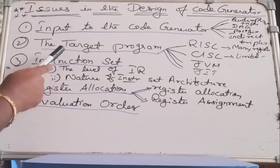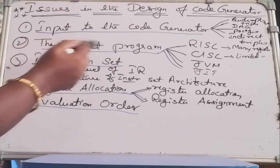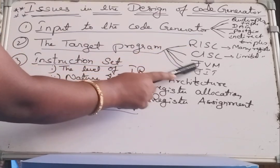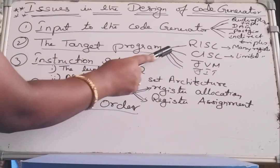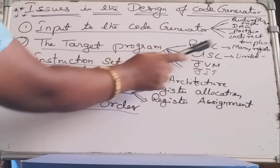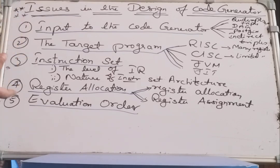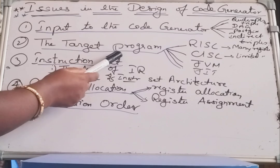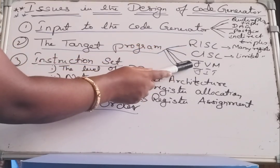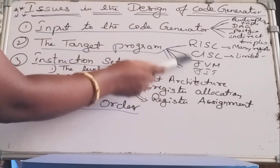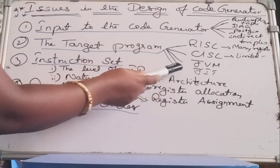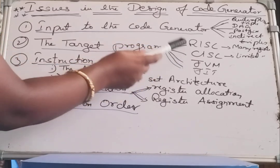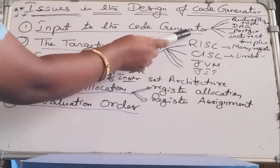The second issue is the target program — how to generate the output. To generate the output, what kind of machine architecture are we using? Either we are using RISC machine architecture, CISC, or higher versions like JVM (Java Virtual Machine) or JIT (Just-In-Time compiler). RISC has many registers so it can process instructions more quickly, while CISC has a limited number of registers. JVM produces results faster compared to RISC and CISC. So the designer has to decide what kind of target code has to be generated and which architecture to use.